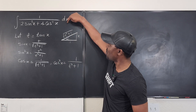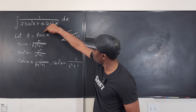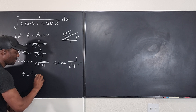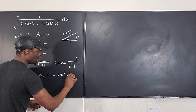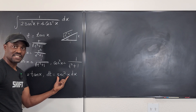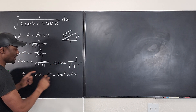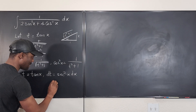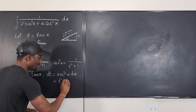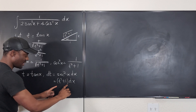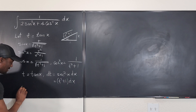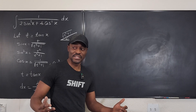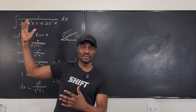The only thing missing is dx. We have t equal to tan(x), so dt equals secant squared x dx. Secant squared is the reciprocal of cosine squared, so secant squared x equals t squared plus 1. Therefore dt equals (t squared plus 1) dx, which means dx equals dt over t squared plus 1. Now we can plug everything into the original integral.